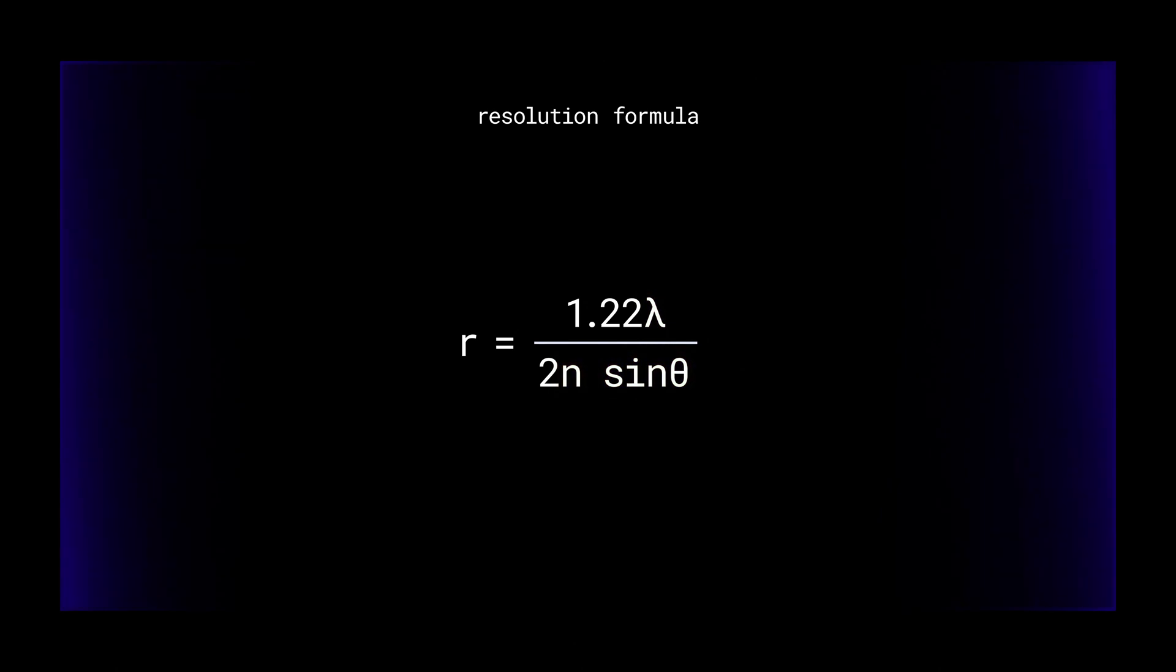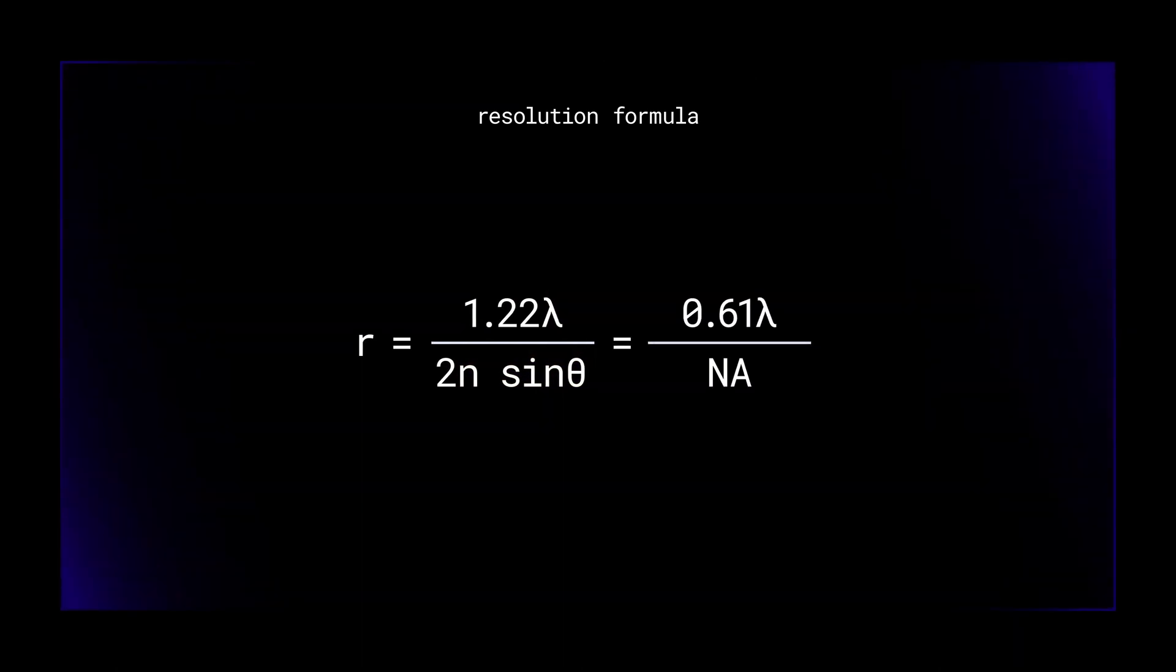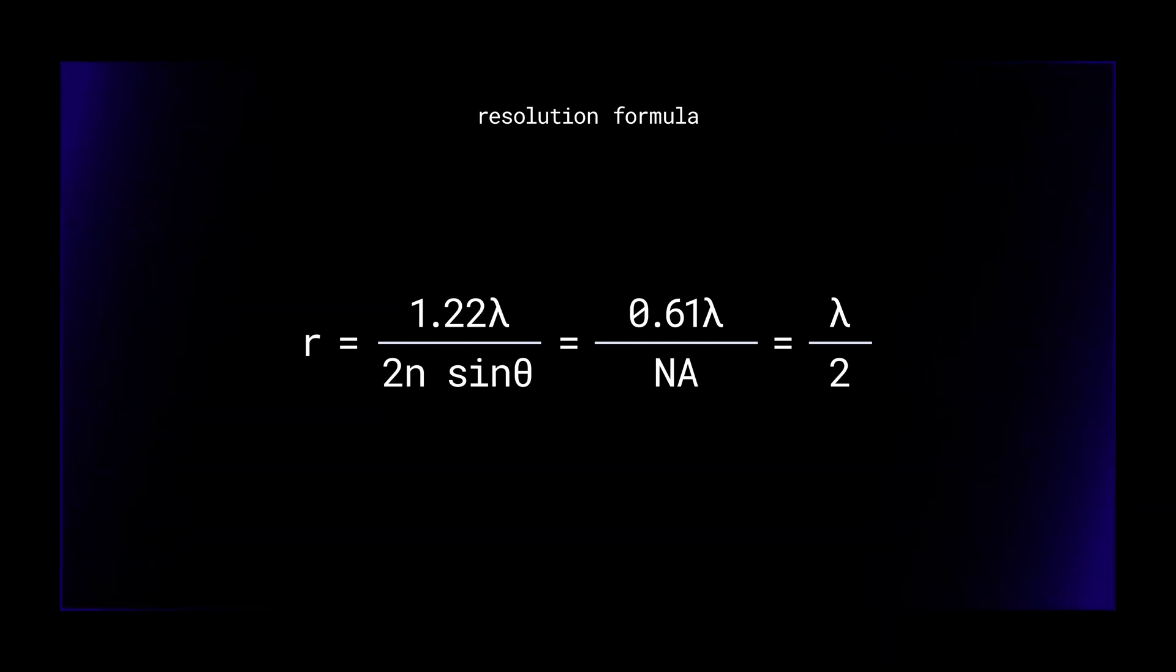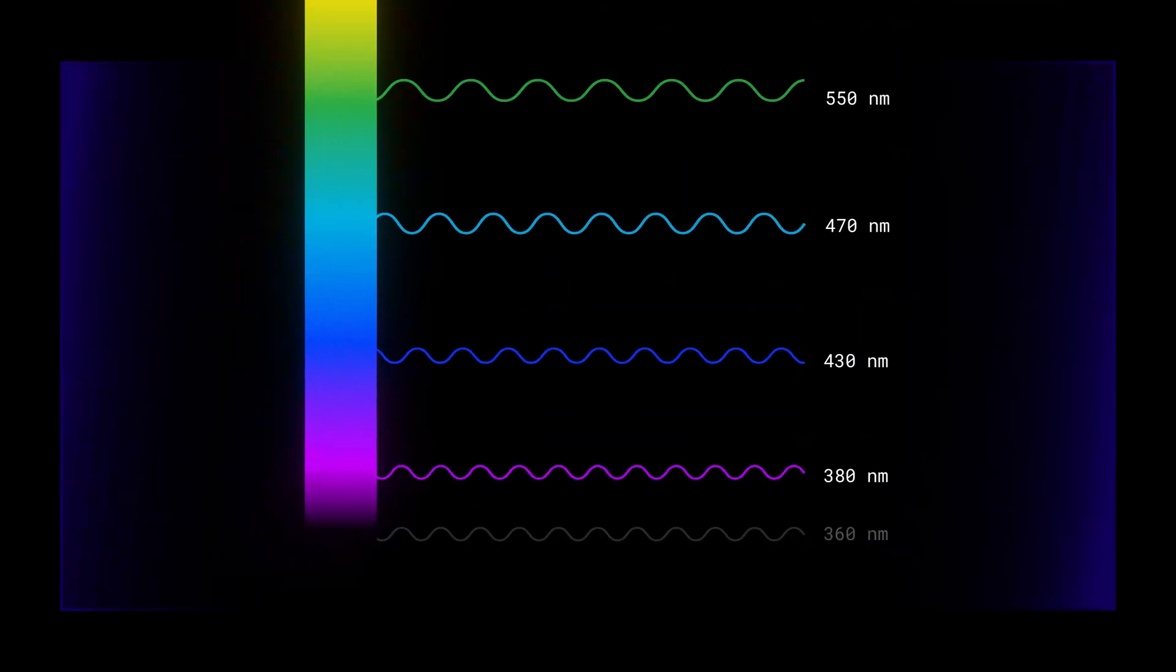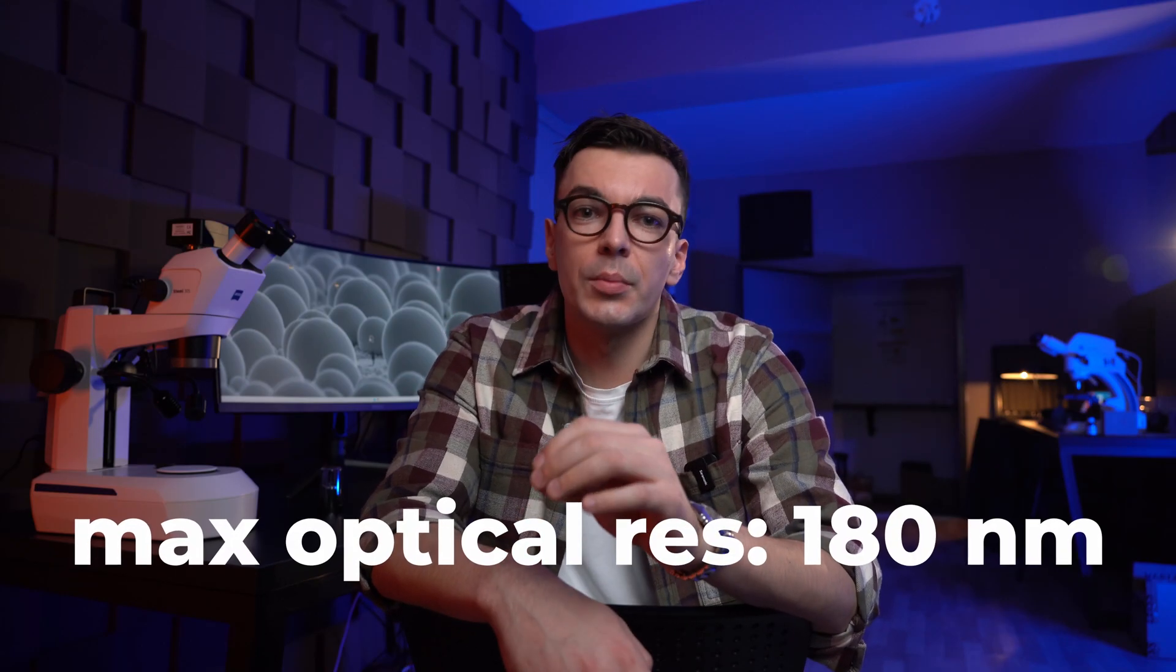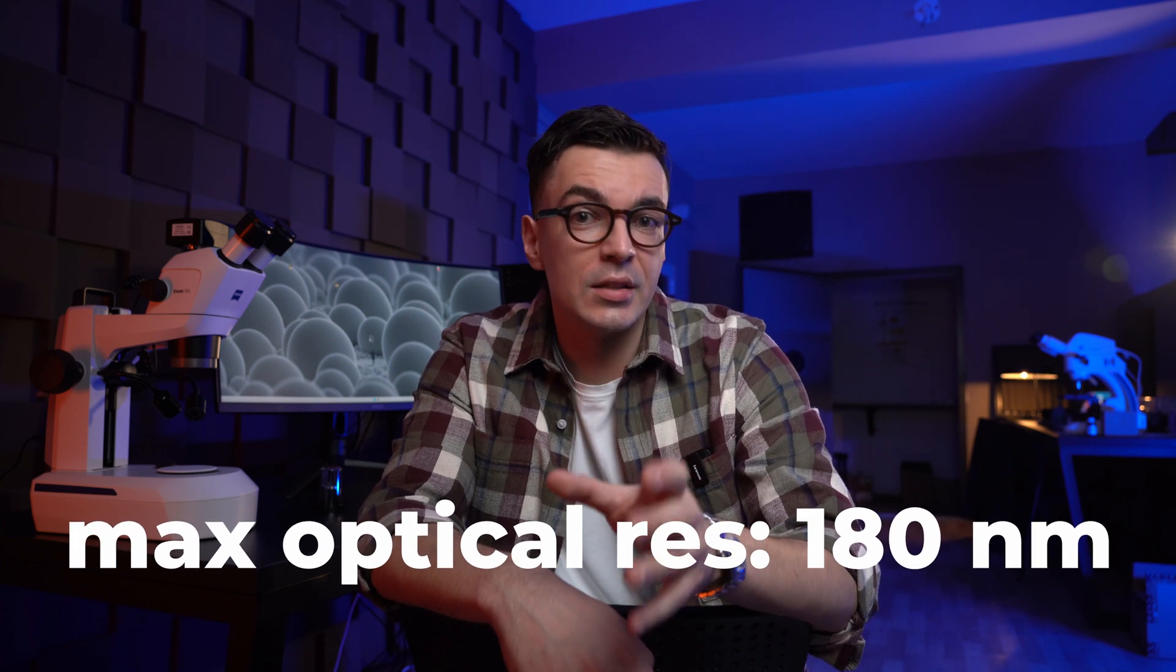And this limit depends on the wavelength of light and the aperture of objective. But after some simplification, it's approximately half the wavelength. So even if you use a deep ultraviolet light source and a perfect optical system with no aberrations at all, which by the way do not exist, the maximum resolution will be somewhere around 180 nanometers.